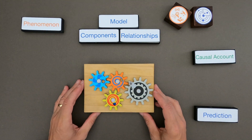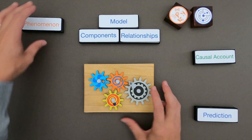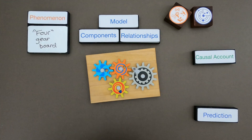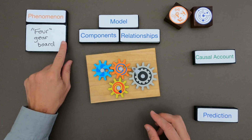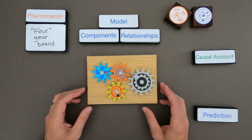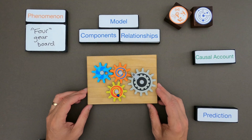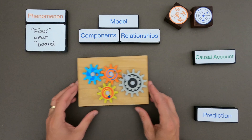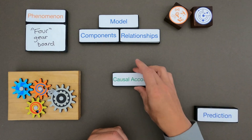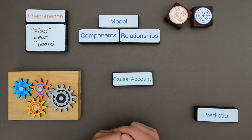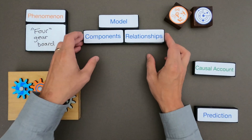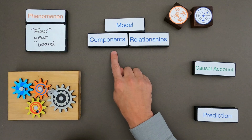So the first thing we want to do is identify the phenomena — this seven-gear board. We want to identify the components, which are going to be the parts of our model. Since this is a causal model we really want to get to the causation. It'll be way easier if we identify all those components as events, or things that take place.